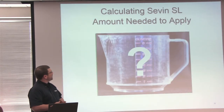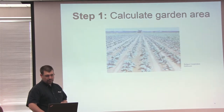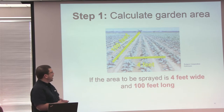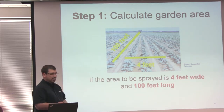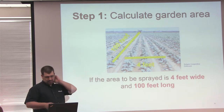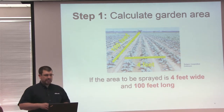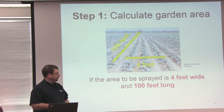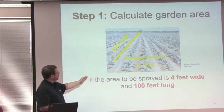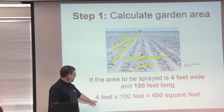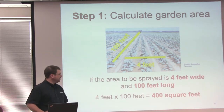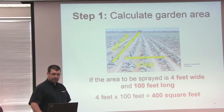So how much Sevin do you need to apply? Our garden is 4 feet wide by 100 feet long. First, we need to calculate the garden area. We take 4 feet, multiply it by 100 feet, and we get 400 square feet.